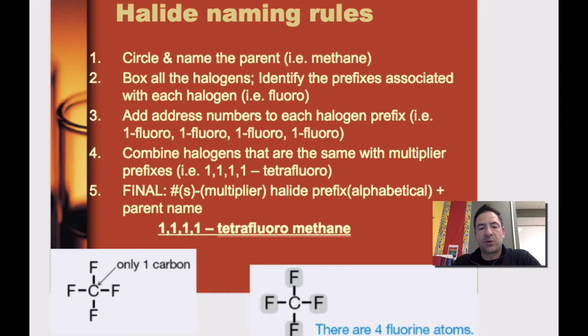The next thing that we're going to do is determine the prefix. So if it was an F, then it would be fluoro. In this case, if you take a look down here at this diagram, I would have to number my carbon. There's only one, so I know it's going to be methane. Now I'm going to put a box around all the halogens, and you notice there are four halogens, and they're all fluorine.